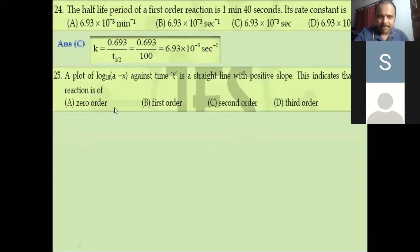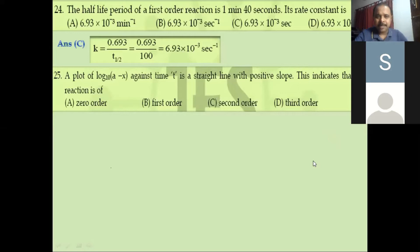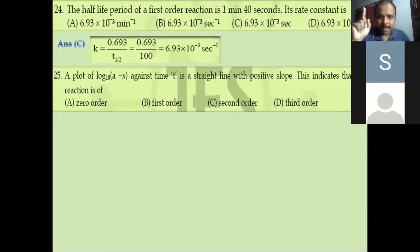For question 25: a plot of log(a−x) against time gives a straight line with positive slope. Log(a−x) is essentially log R plotted against time. For a first-order reaction, if log R versus time is a straight line, it indicates first order. For zero order, R versus time would be plotted. So this should be first order.